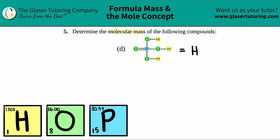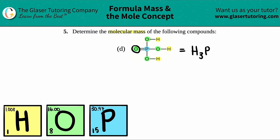How many hydrogens are in this compound? I have one, two, three — so this would be H3. Now for phosphorus, I have only one blue circle, one P, so I just have one phosphorus. For oxygen, I have one, two, three, four — so I have O4. This is an acid — this is phosphoric acid, H₃PO₄.